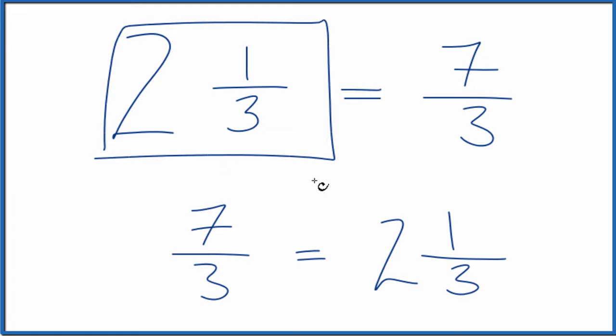That's what we had before, so we know we did this correctly. The mixed number 2 and 1 third equals the improper fraction 7 thirds.